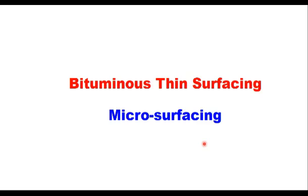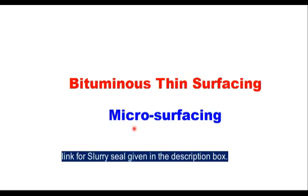Today we will discuss bituminous thin surfacing. There are several types of thin surfacing like premixed carpet, surface dressing, slurry seal or mixed seal surfacing, and microsurfacing. Today we will discuss microsurfacing; slurry seal has been discussed in an earlier session.